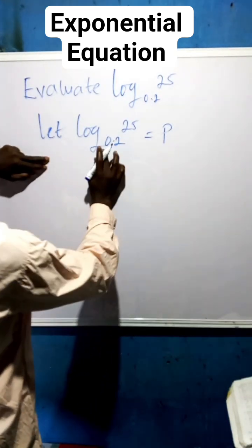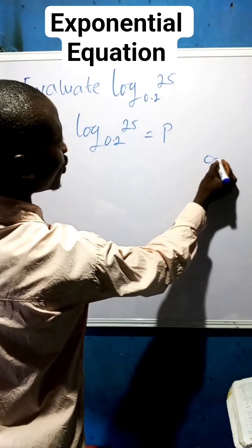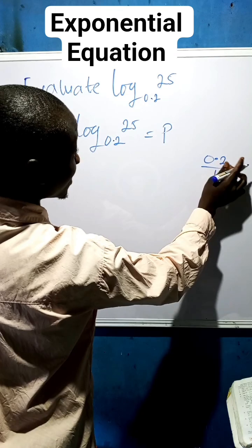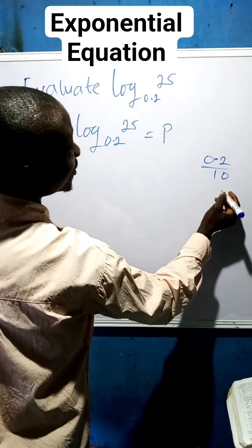Now we're going to have this 0.2. You can equally put it to a fraction, so this decimal point becomes 1. How many digits after this point? One digit, which is 0.